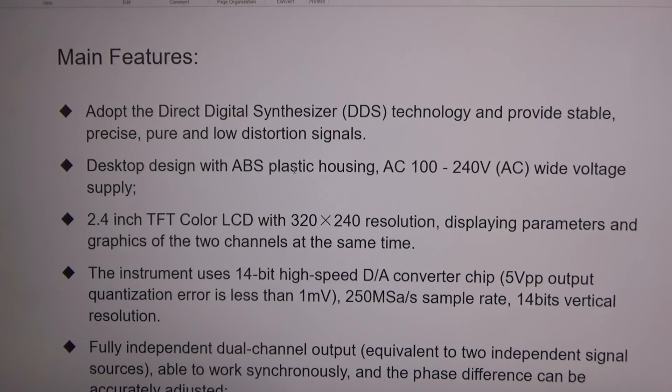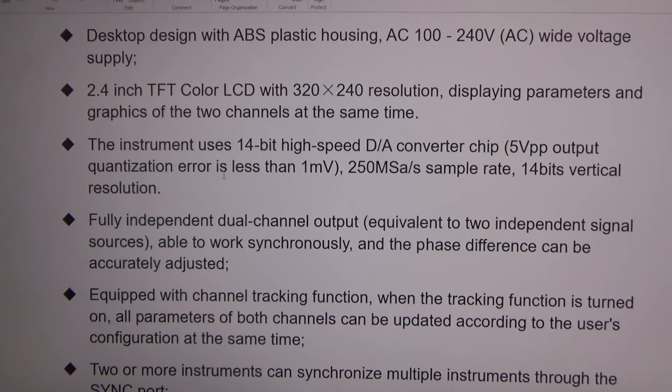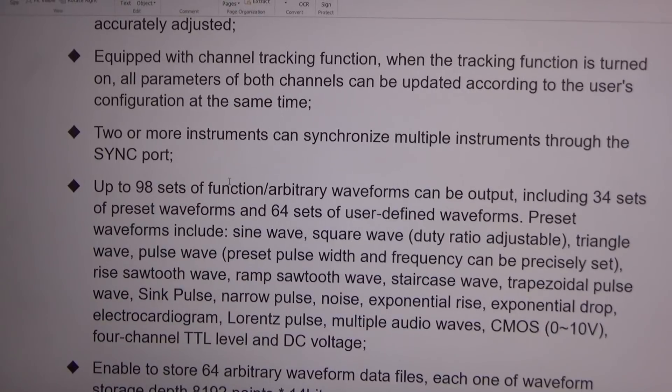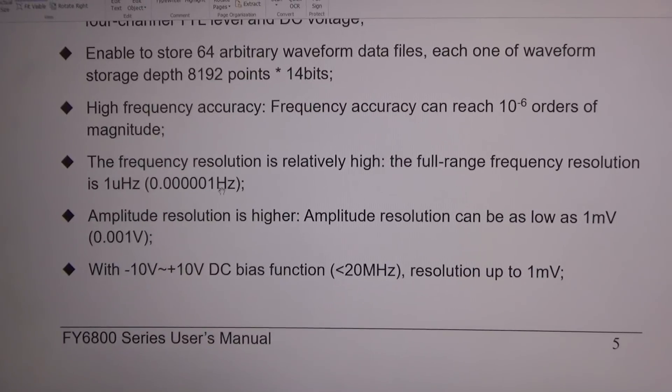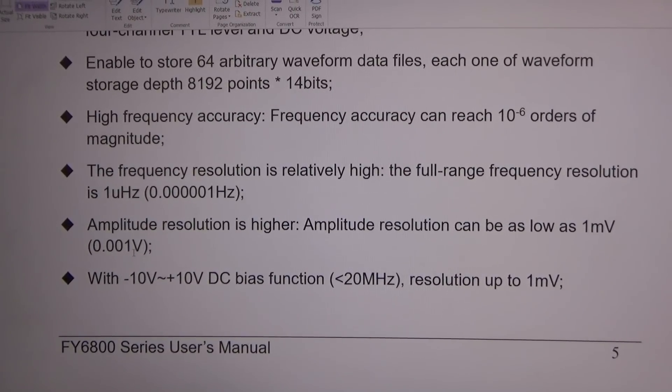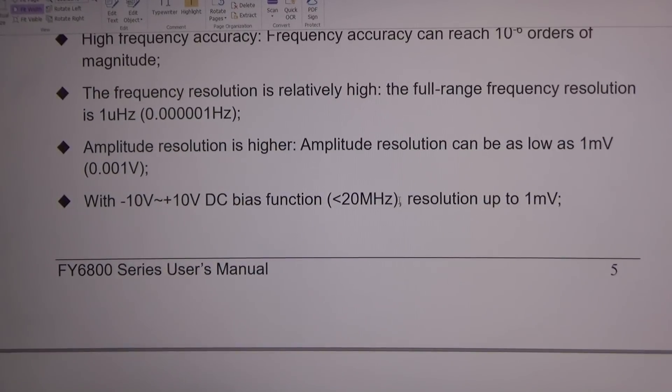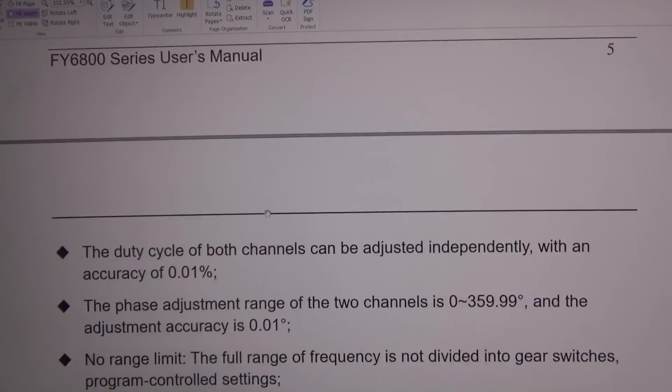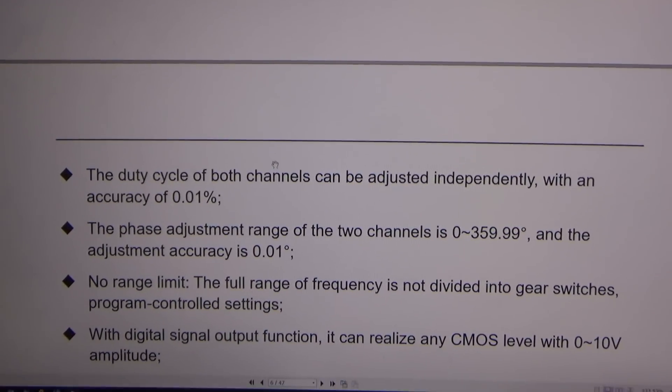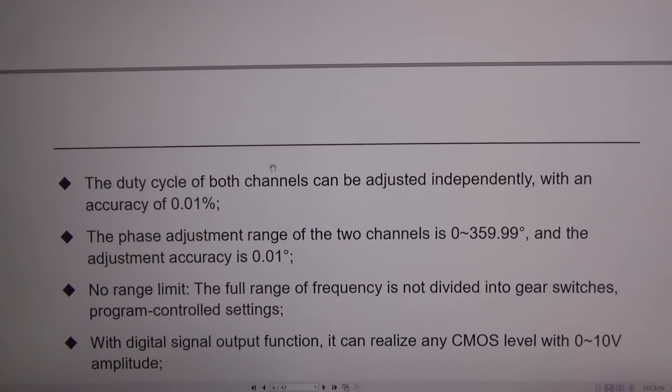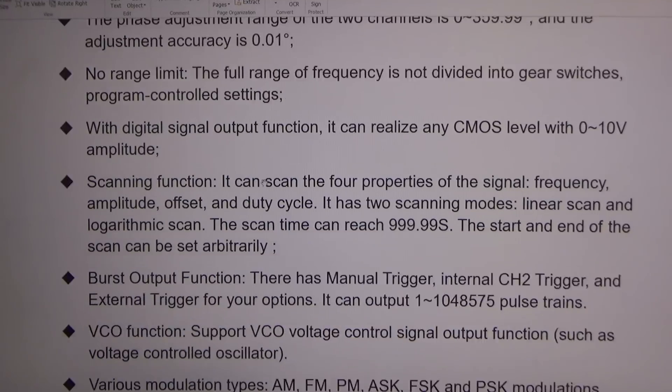This arbitrary signal generator is feature-packed as you will see. Lots and lots of options and adjustments and controls including ridiculously low frequency resolution adjust and equally small amplitude adjust. Plus or minus 10 volt DC bias on the output although note that at the highest frequencies the output is somewhat limited. Phase adjustment. Two completely independent channels.